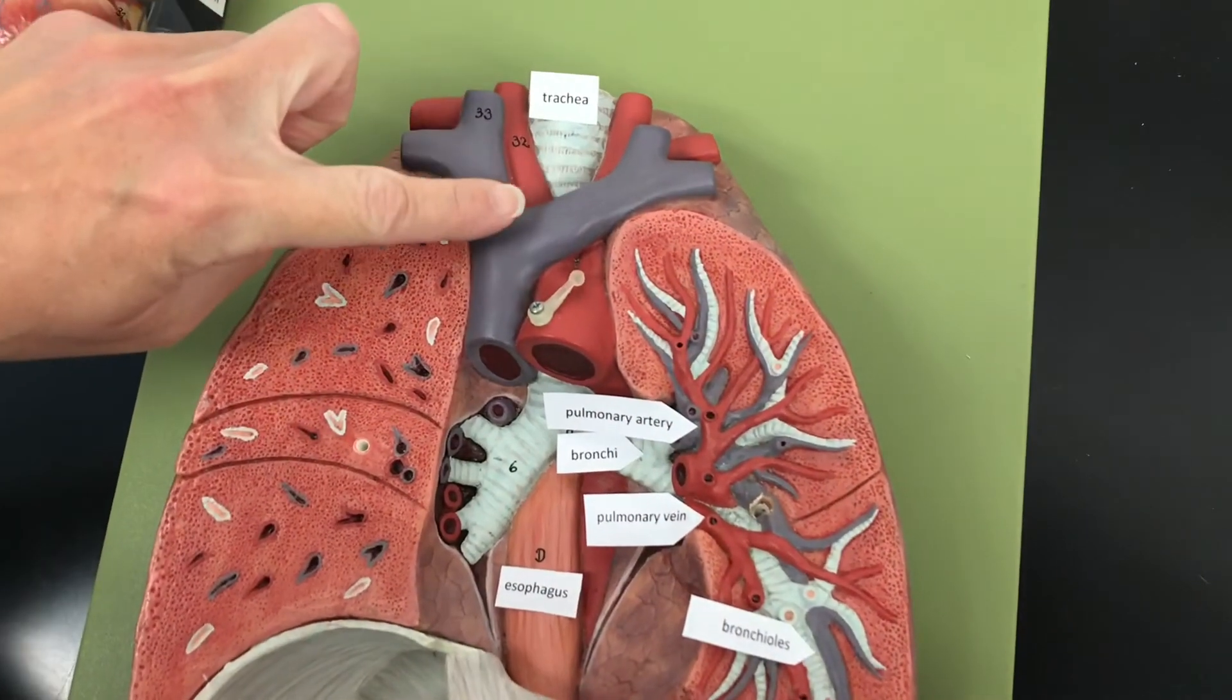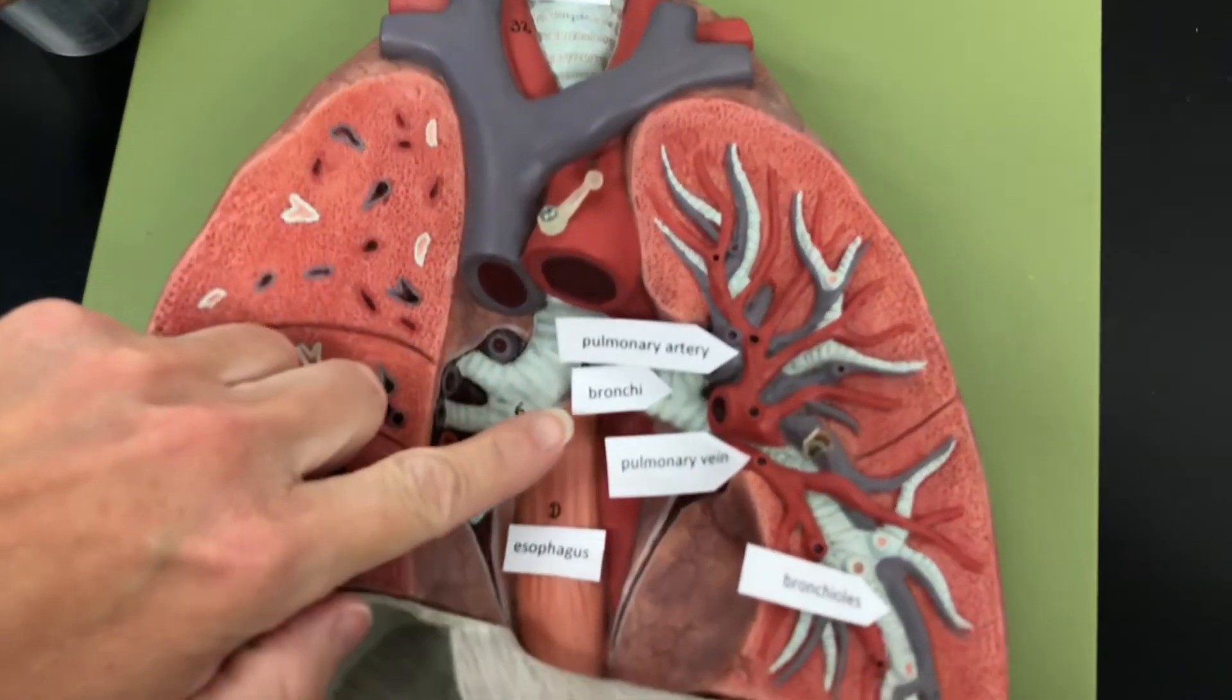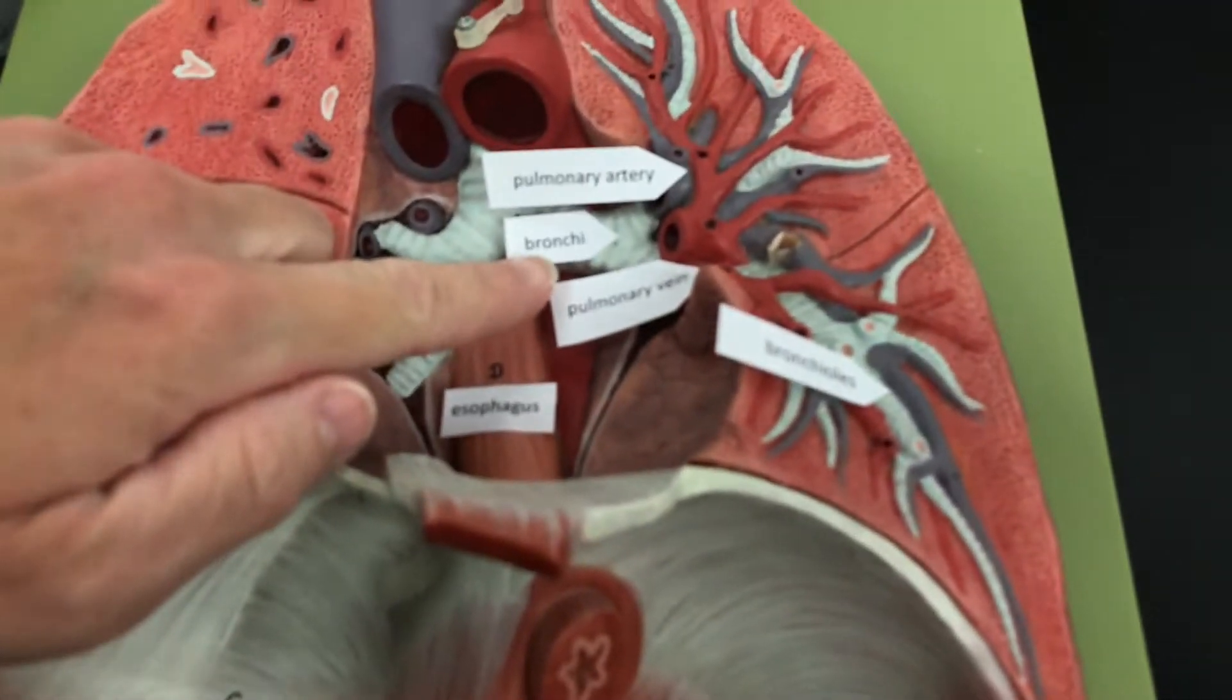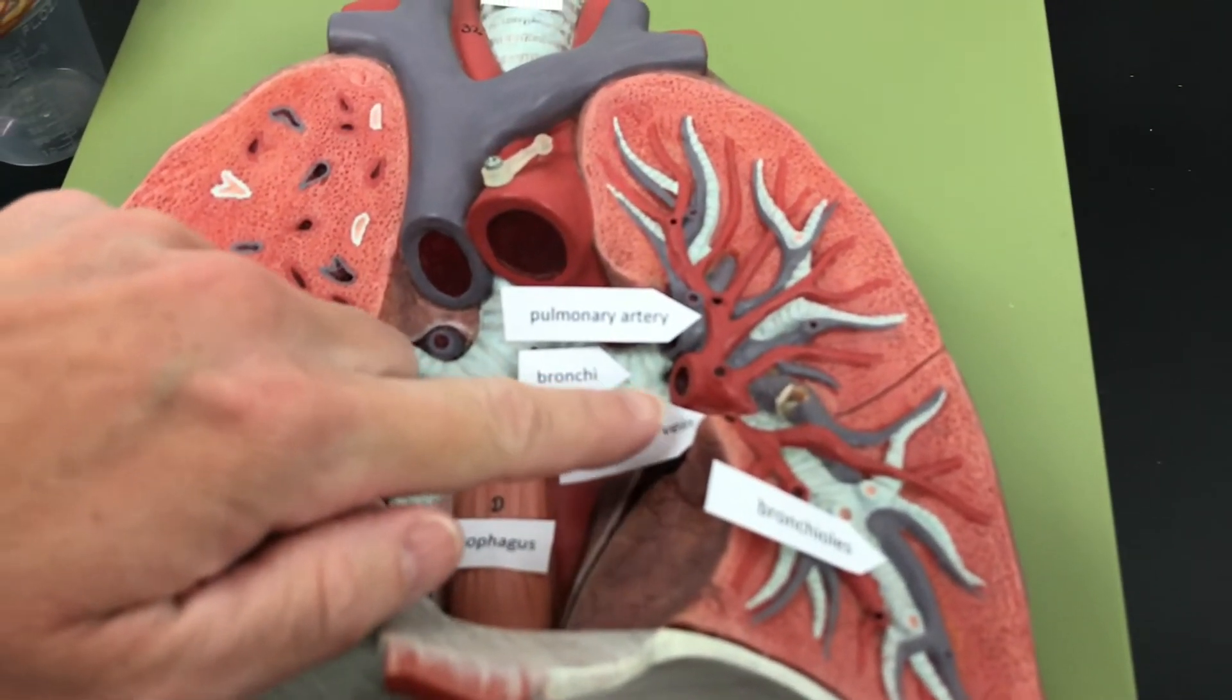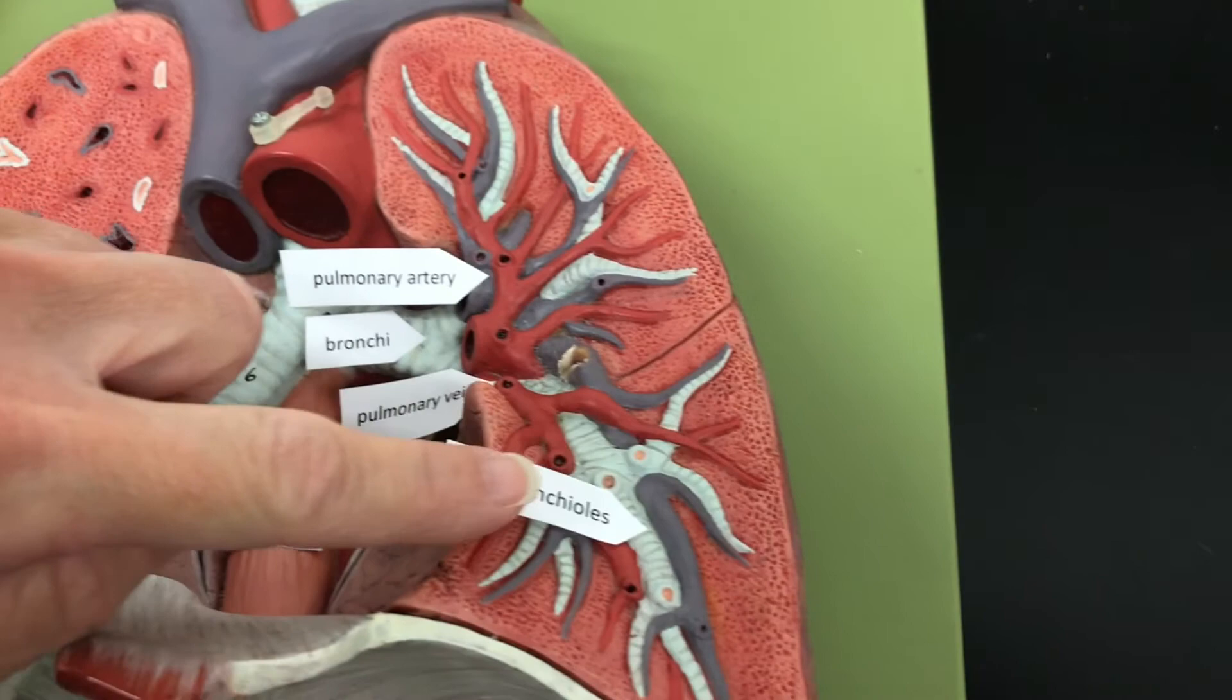So the trachea comes down and it branches into the bronchi. The bronchi tubes get narrower into bronchioles.